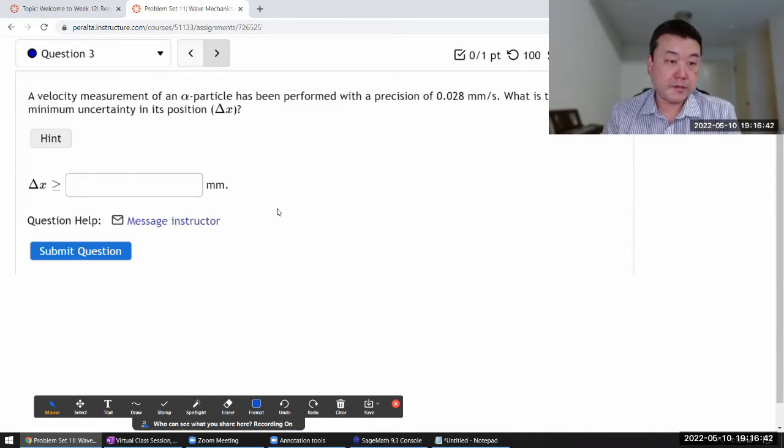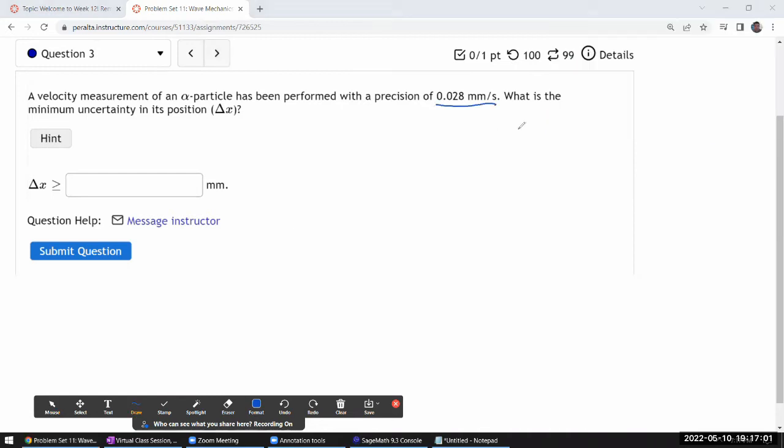Okay, so it says velocity measurement of an alpha particle has been performed with a precision of this much. Let me label that as my delta V. What is the minimum uncertainty in its position? Yeah, minimum uncertainty.